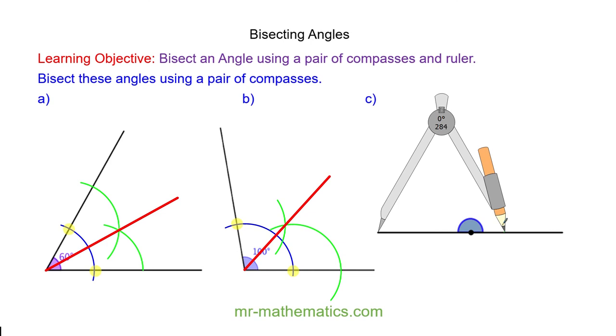Now I'm going to draw an arc above the line and below the line. Keeping the radius of the compass the same length I'm going to draw an arc above and below from the other side.